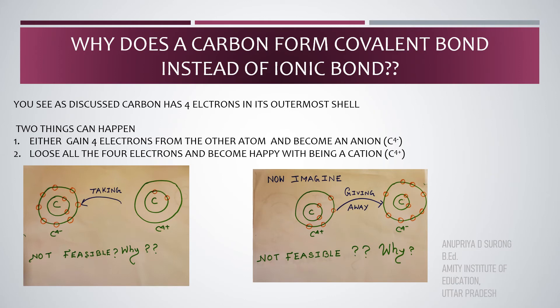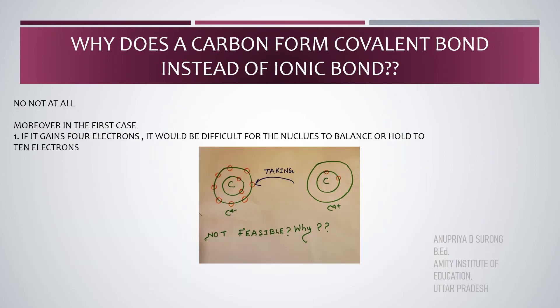Remember, electrons equals to proton. Now, think about it. Are the protons and electrons equal in number now? I repeat. Remember, electrons equals to proton. No, not at all. Moreover, in the first case, look at the picture and listen to me carefully. If it gains 4 electrons, it would be difficult for the nucleus to balance or hold in 10 electrons. That is, extra 4 electrons.